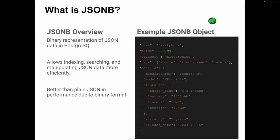JSONB makes indexing, searching, and manipulating JSON data faster and more efficient. It outperforms plain JSON in most cases due to its efficient storage and indexing capabilities. Here's an example of a typical JSONB object you might use for product attributes in an e-commerce platform — JSONB allows you to store complex nested data like product specifications in a single record, making it perfect for schema-less data.